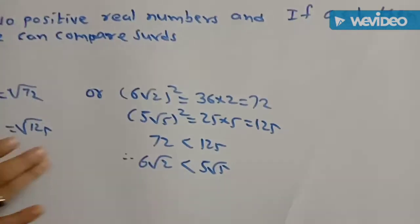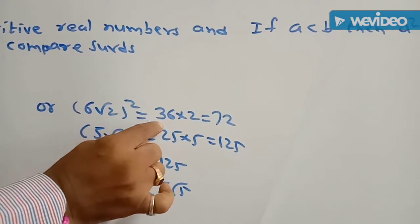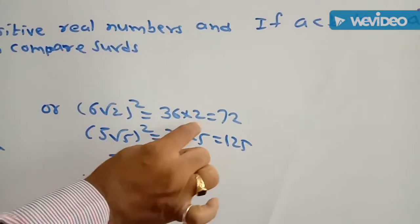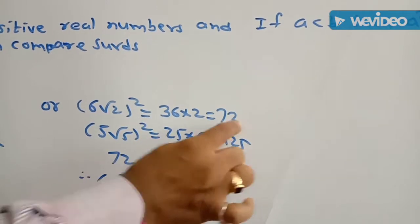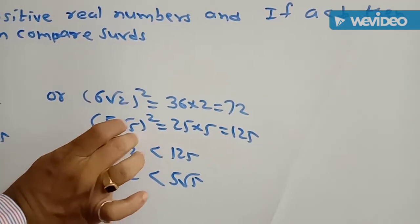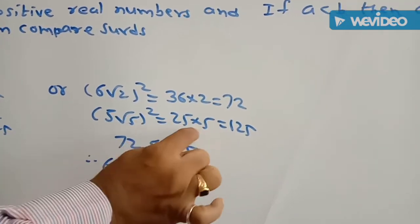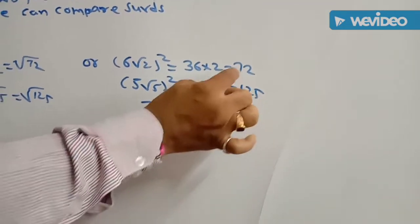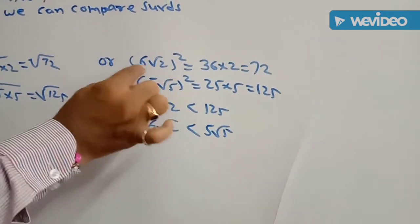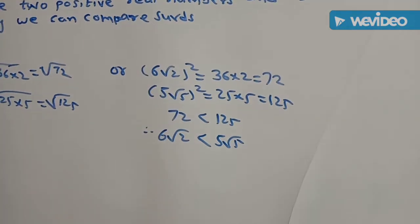Alternatively: (6 root of 2) squared equals 36 into 2, which is 72. And (5 root of 2) squared equals 25 into 5, which is 125. Since 72 is less than 125, therefore 6 root of 2 is less than 5 root of 2.